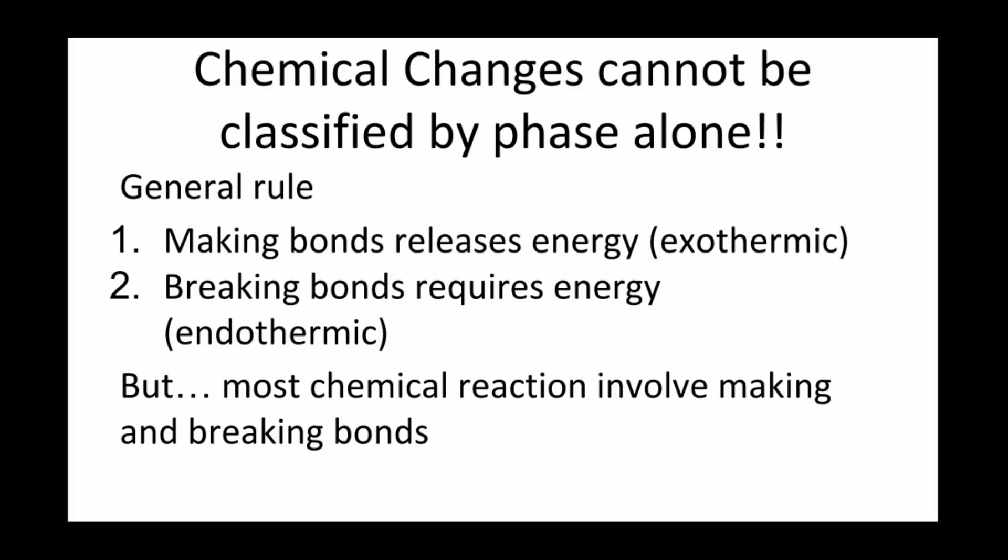Writing in the heat term in a chemical reaction is not as simple as a physical change. There is a general rule, however, that always applies. Making bonds release energy. That's why almost every substance in the universe is a compound and not a simple element. Elements form compounds to obtain more stable, noble gas valence electron configuration. This stability is reflected in their release of energy. Making bonds is exothermic.